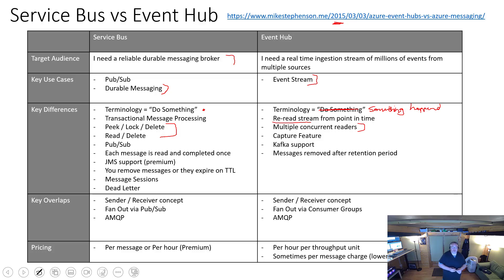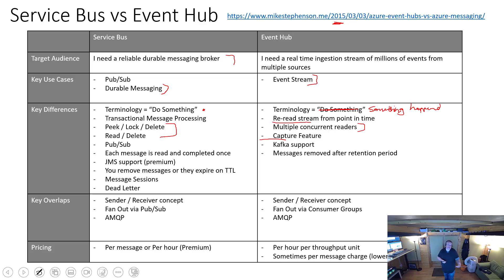One feature on Event Hub that's different is the capture feature. If you want to archive messages or get them into a data lake, you can configure the Event Hub so that all messages on the hub get automatically saved into a storage account. You can then use that for ingestion into something like a data lake for Synapse, or just to archive all your messages. You don't really have that auto-archive capability on Service Bus.